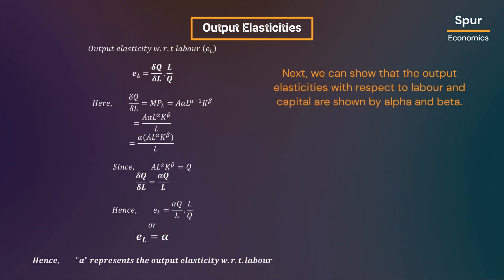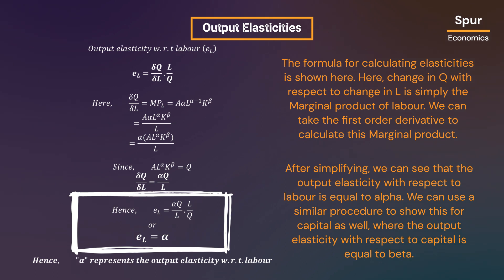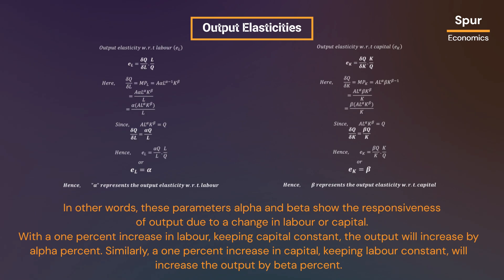Next, we can show that the output elasticities with respect to labor and capital are given by alpha and beta. The formula for calculating elasticities is shown here. The change in Q with respect to change in L is simply the marginal product of labor. We can take the first-order derivative to calculate this marginal product. After simplifying, we can see that the output elasticity with respect to labor is equal to alpha, and the output elasticity with respect to capital is equal to beta. In other words, with a one percent increase in labor keeping capital constant, the output will increase by alpha percent. Similarly, a one percent increase in capital keeping labor constant will increase output by beta percent.